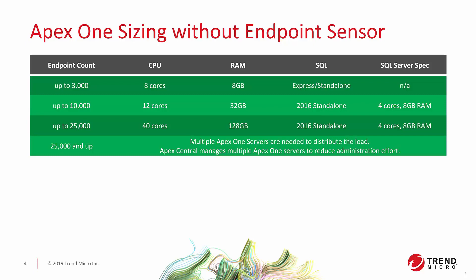As you go higher, you ramp up on the Apex One side until you reach 25,000 agents, where you're looking at 40 cores and 128 GB of RAM. The SQL Server doesn't change too much. At 60,000 agents, you'll want to bring up another Apex One server to balance the load. Apex Central manages all of your Apex One servers, so the management overhead for administrators goes way down regardless of whether you have 25,000, 50,000, or 200,000 endpoints — just register your Apex One servers to Apex Central and manage everything through one console.